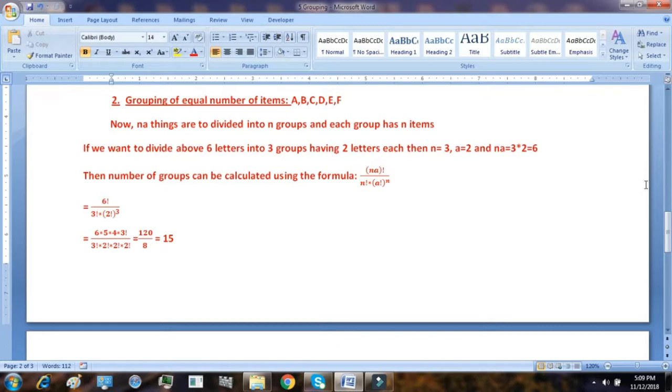If any things are to be divided into N groups and each group has A items, let it be clear that we want to make N groups and each group will have A number of items. So what are we here? NA items. Now if you want to divide the above mentioned 6 letters into 3 groups having 2 letters each, I have 6 letters. I want to make 3 groups of 2 letters each.